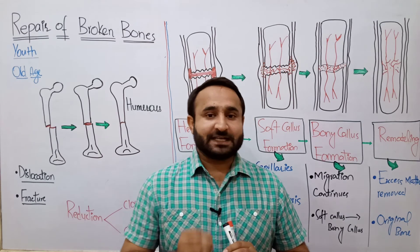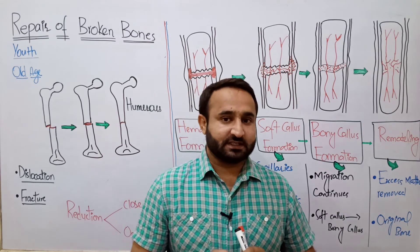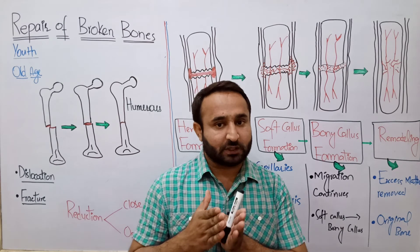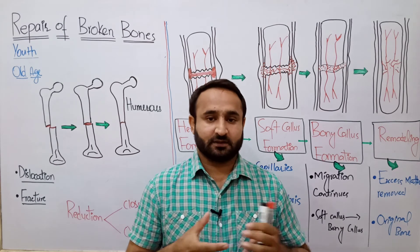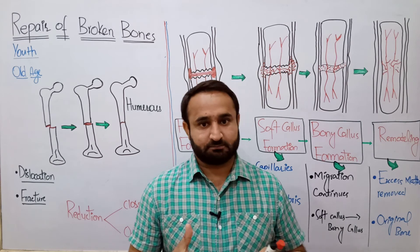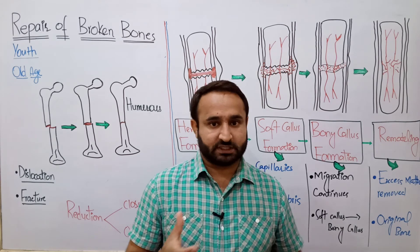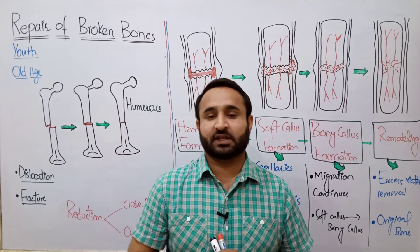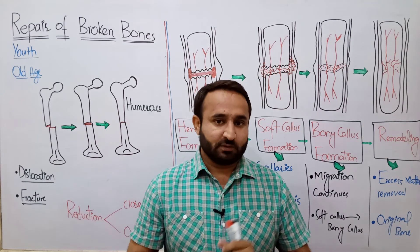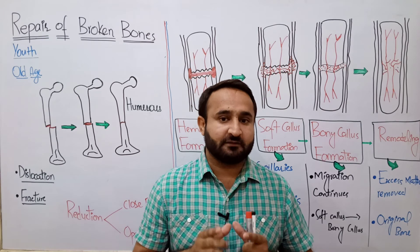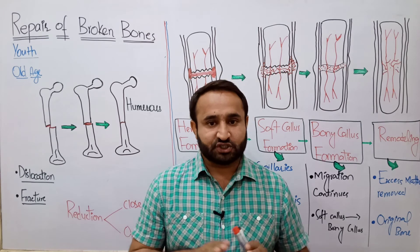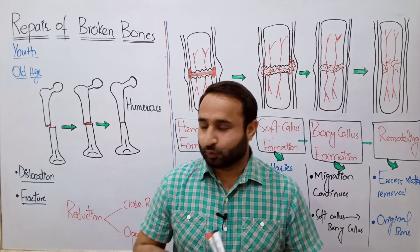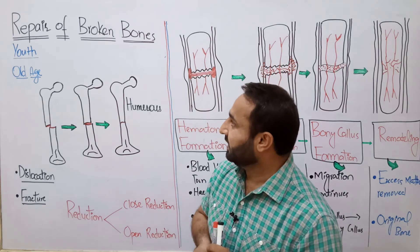One more thing: there is dislocation — joint dislocation — meaning a joint slips out of place. For example, the knee joint slips or the elbow or shoulder joint dislocates. This is called joint dislocation. Bone fracture — the breaking of a bone — is a separate thing. Joint dislocation is a separate thing. This topic covers repair in relation to both.